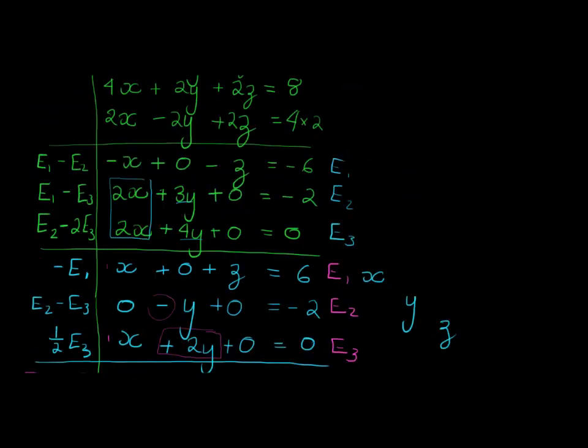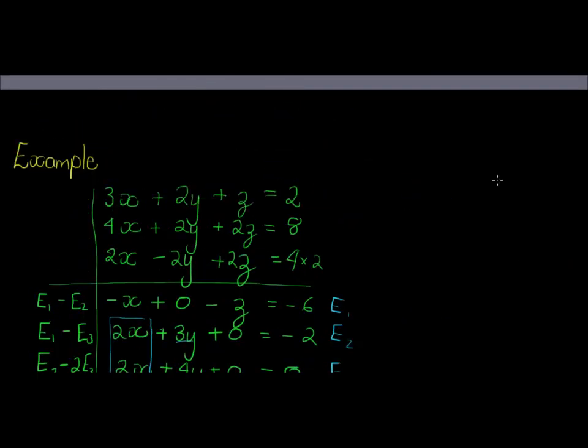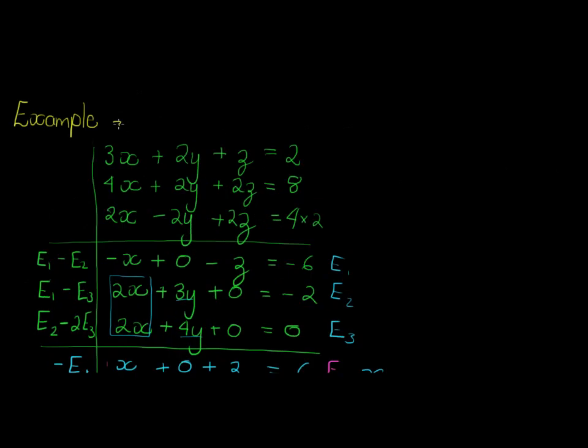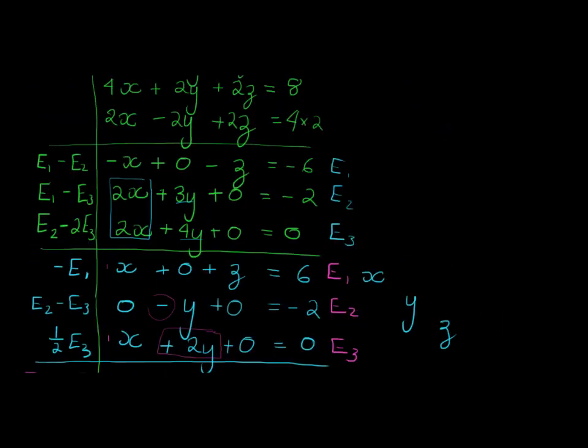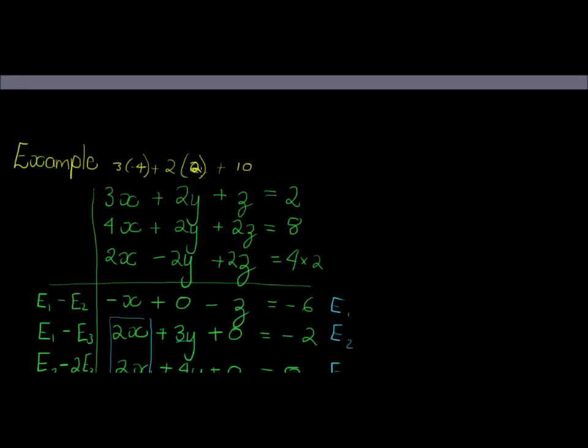Let's just go and test it in our original equation. So we have 3 times negative 4, plus 2 times, what was that, 6 plus 10. Sorry, is y 6? No, sorry, y is 2. 2 times 2. Okay, so 3 times, that's negative 12, plus 4, plus 10. Should equal to, let's see, negative 12 plus 4 is negative 8, plus 10 is equal to 2. Well done.